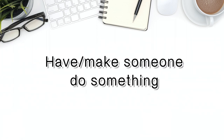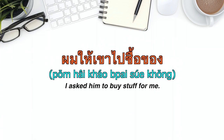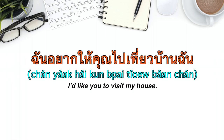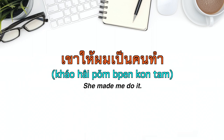ให้ is also used to mean 'have' or 'make someone do something.' ผมให้เขาไปซื้อของ — 'I asked him to buy stuff for me.' ฉันอยากให้คุณไปเที่ยวบ้านฉัน — 'I would like you to visit my house.' เขาให้ผมเป็นคนทำ — 'She made me do it.' ให้ผมมารับตอนไหน — 'When do you want me to pick you up?'